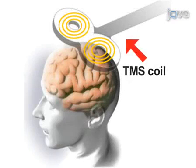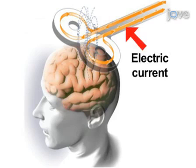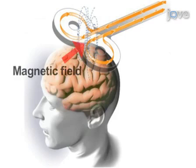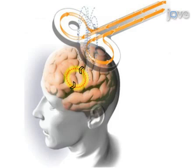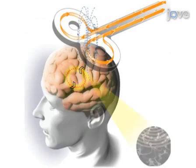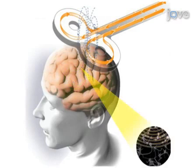TMS is a non-invasive neurostimulation technique that is used to alter neuronal activity through the application of a brief magnetic pulse. The application of TMS provides a safe and non-invasive means for disrupting neuronal activity with a high degree of spatial and temporal specificity.